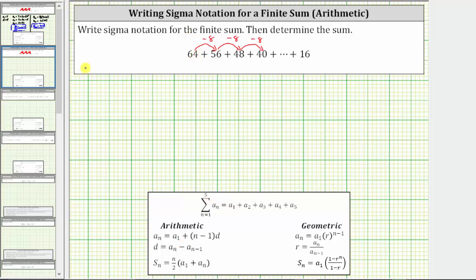Because the first term is 64, a sub 1 equals 64. The common difference d is negative 8 because the pattern is to subtract 8 each time, or add negative 8.